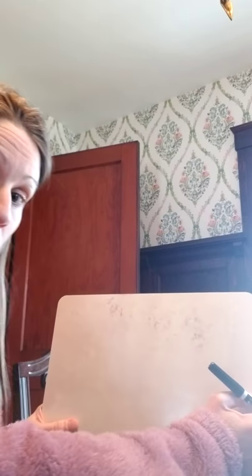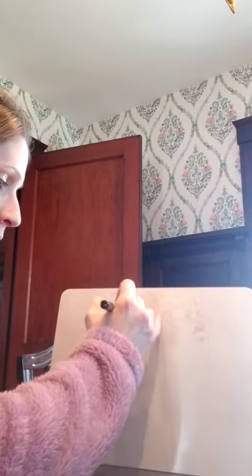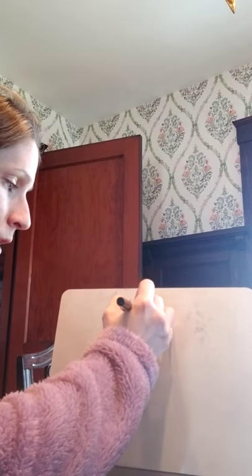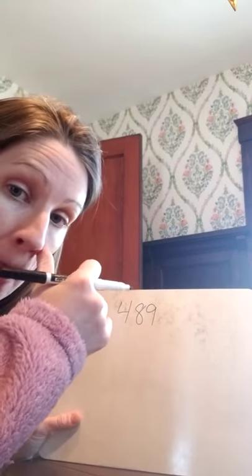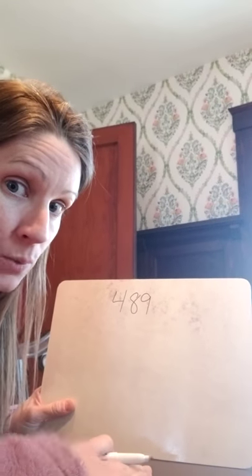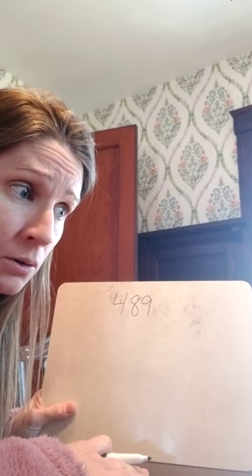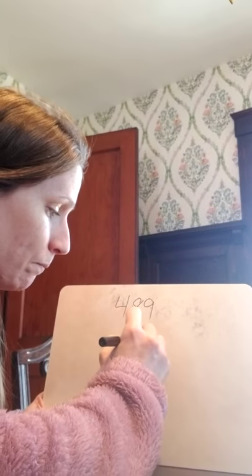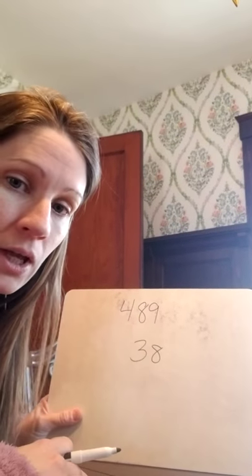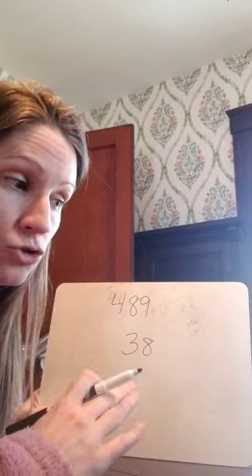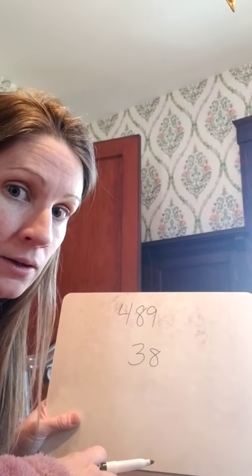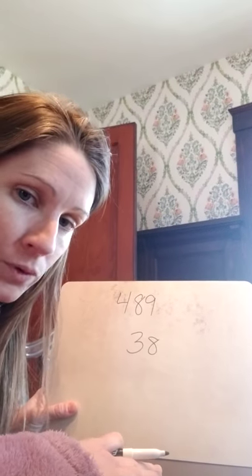If I have standard form — say I have the number four hundred eighty-nine. That's the standard way to write a number. Standard form is just the way we write our numbers normally. So if I have the number thirty-eight, that's all it is. You're just writing it in the standard form, the standard way we do things.